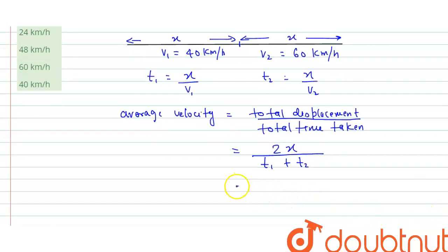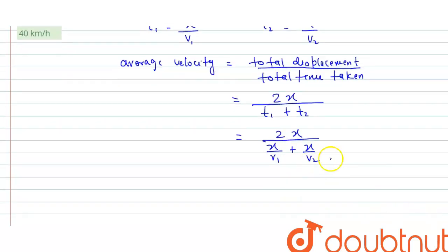Now put the value of t1 and t2 in this particular equation: 2x upon t1 is x upon v1 plus t2 is x upon v2. Now take LCM.